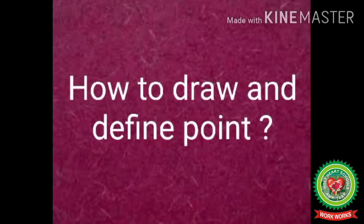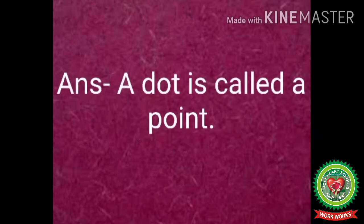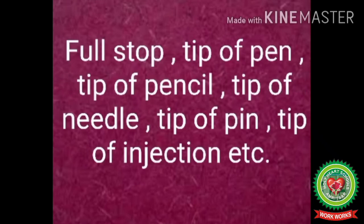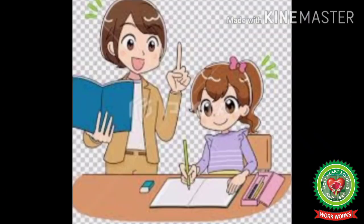Let us recall what we have learnt today. Today we have learnt how to draw and define a point on copy with its examples. A dot is called a point. Tip of pen, tip of pencil, tip of needle, tip of pin, tip of injection, etc. are its examples. I hope you all understood how to draw and define a point on copy. So open your snap homework and do your work. Thank you.